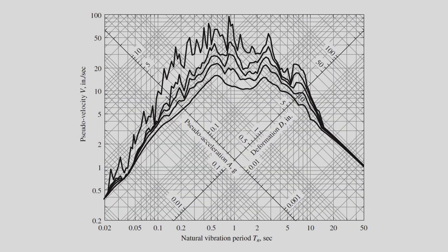On the y-axis we have pseudo velocity versus time period along the x-axis. The plot is in log-log scale. We derived the equations for the three plots. We have the deformation along the 45-degree axis and acceleration along the 135-degree axis. Interestingly, we write deformation as the maximum relative deformation with respect to ground, but for velocity and acceleration we introduce the term pseudo — it comes by multiplying the deformation by omega_n for velocity, and omega_n squared for acceleration.